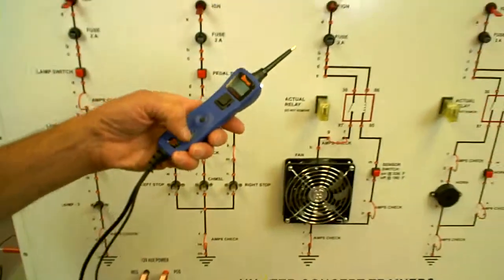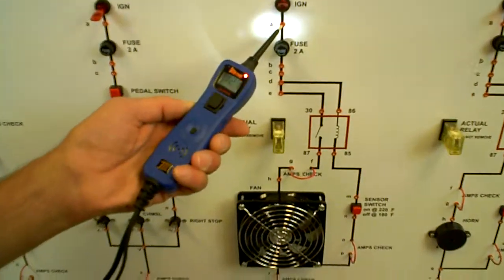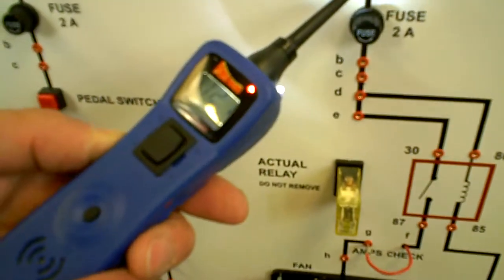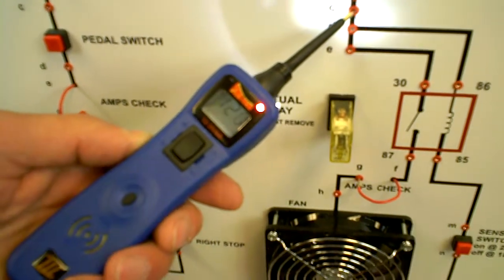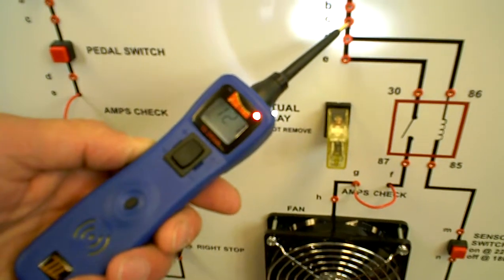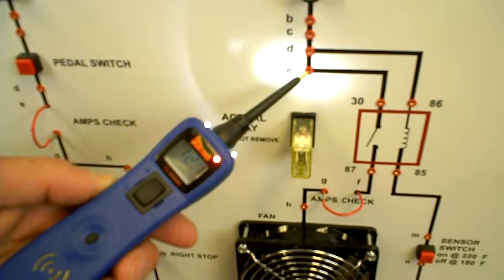In order to do a diagnosis, I'm showing 12.1 volts before the fuse, 12.1 volts after the fuse at number C, 12.1 volts at number D, number E, 12.1.